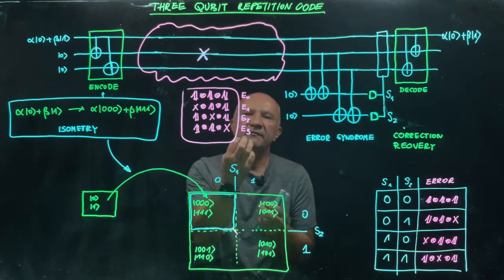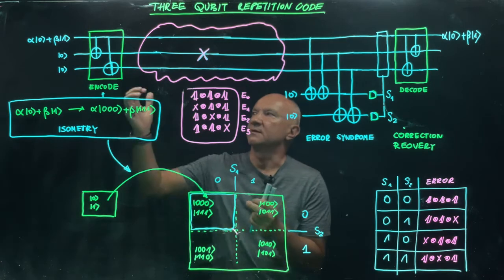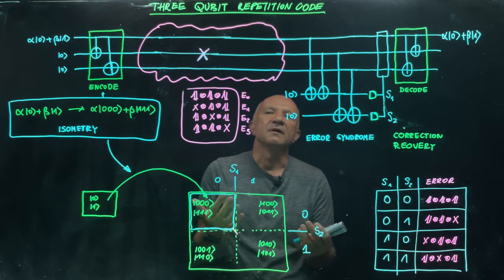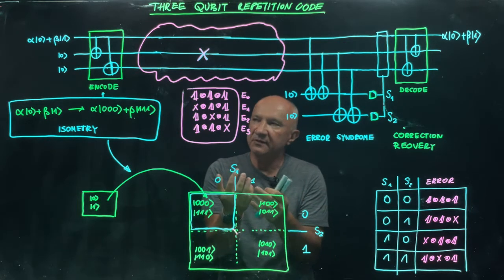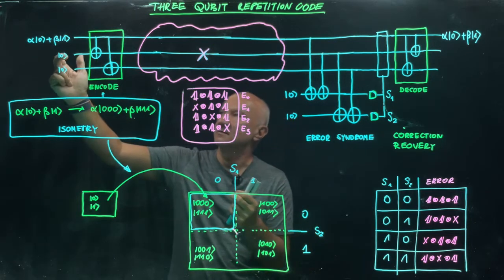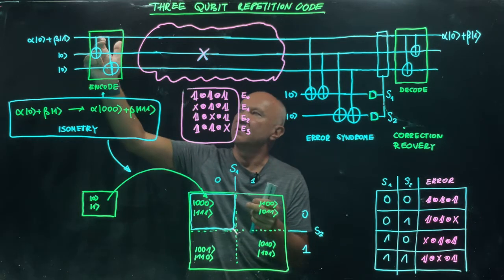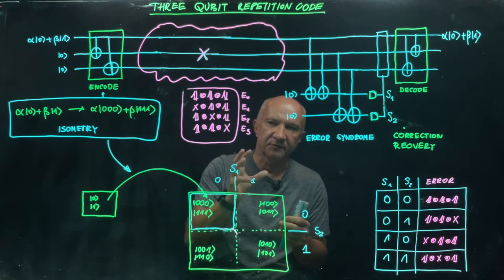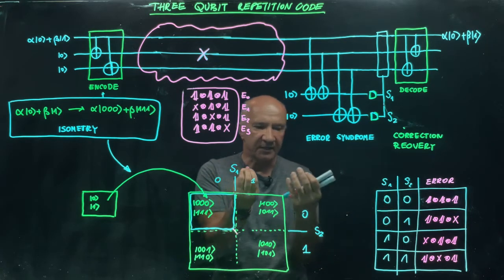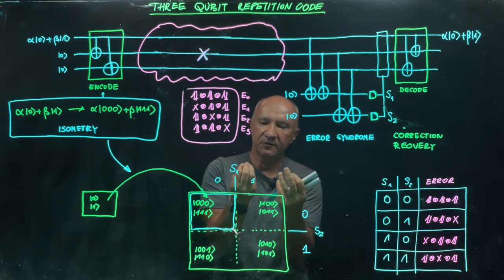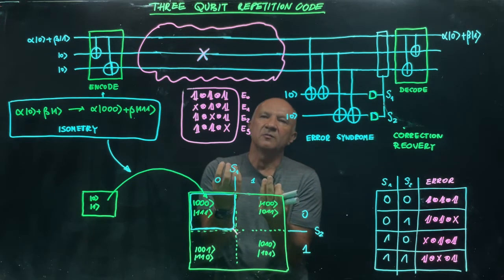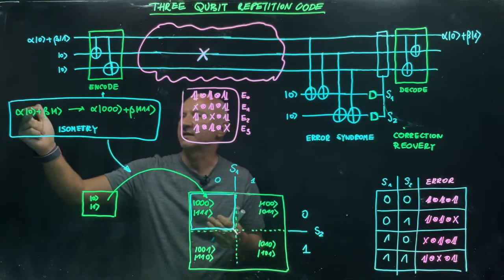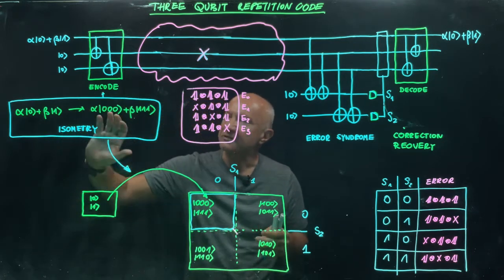First, you are given an unknown quantum state whose generic form is alpha|0> plus beta|1>. You encode this unknown quantum state by bringing two other qubits in state |0,0> and applying a two-controlled-NOT operation. This is a classic example of isometry: you have a quantum state of one system, you bring another system — in this case two qubits in state |0,0> — and apply a unitary operation so that your original state alpha|0> plus beta|1> is embedded in an eight-dimensional Hilbert space.